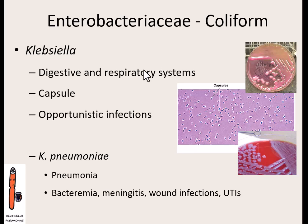Because it's part of normal flora for many individuals, it usually only causes issues if it gets somewhere else or if you become immunocompromised. The number one Klebsiella that causes issues is Klebsiella pneumoniae. Although its name has the word 'pneumonia,' it's not the only thing it can cause. It just depends on where the bacteria gets: bloodstream causes bacteremia, nervous system causes meningitis, a wound causes wound infection, urinary tract causes a UTI. It just depends on where the bacteria gets.